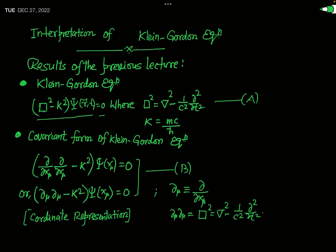The D'Alembertian operator is denoted by the box-square symbol, also written simply as a box. It equals ∇² minus (1/c²)(∂²/∂t²). The constant K stands for mc/ℏ, where M is the rest mass of the particle.